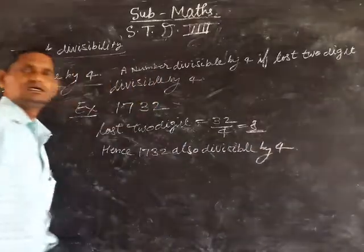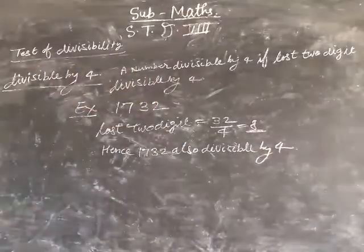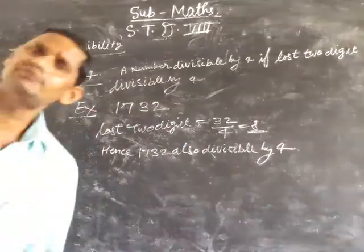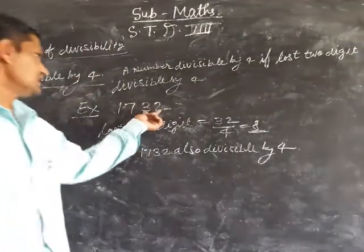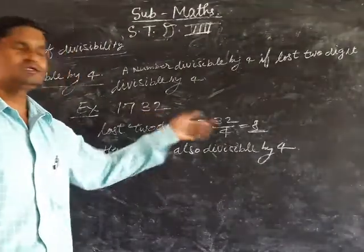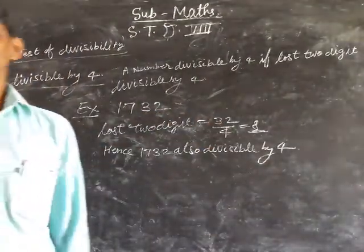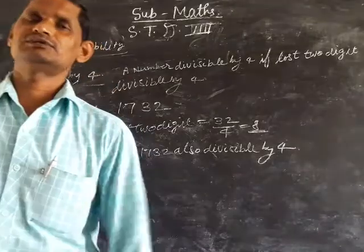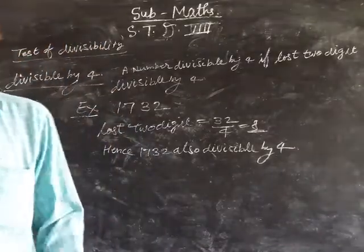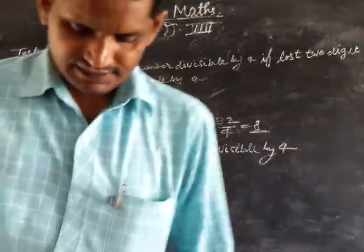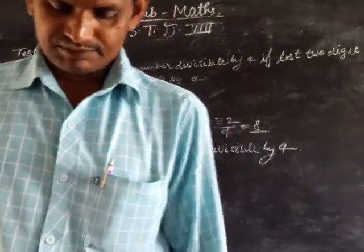This is the rule of divisible by 4. If the last 2 digits of a number are divisible by 4, then the number is also divisible by 4.